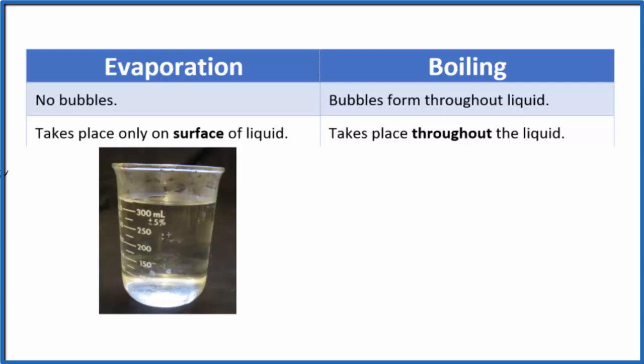This leads to our second point: evaporation only takes place on the surface of the liquid. In our beaker here, water molecules are leaving the beaker, but they're only leaving from the surface. That's the only place they can really get out. Evaporation takes place at the surface of the liquid.